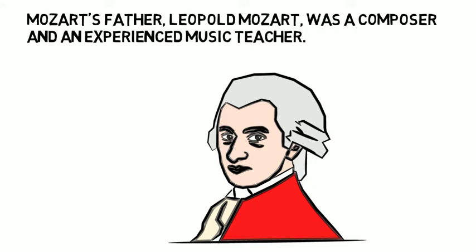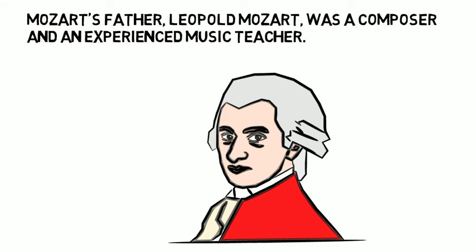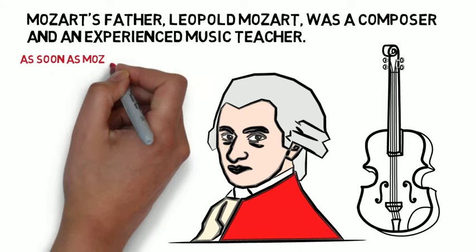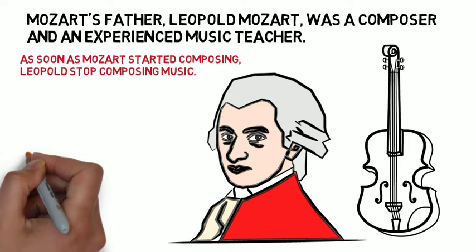When Mozart was 4 to 5, he was able to demonstrate ability to play music fluently. As soon as Mozart was composing music, Leopold stopped composing music. Coincidence?